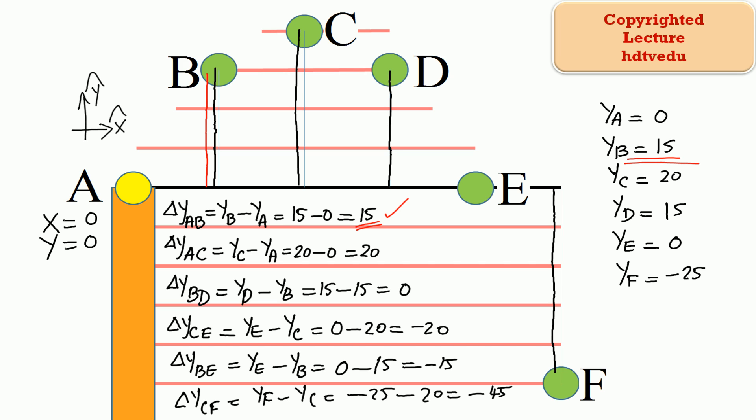What is the vertical displacement between points A and C? At point C the vertical position is 20; at point A it is 0. So 20 minus 0 is 20 — positive 5, 10, 15, 20. The vertical displacement between points A and C is positive 20. Point C is above point A.